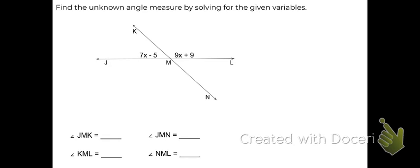Here we're asked to find the unknown angle measures by solving for the given variables. So down below, you see they're asking for the measure of the four angles that are formed by these two intersecting lines. Let me highlight them.